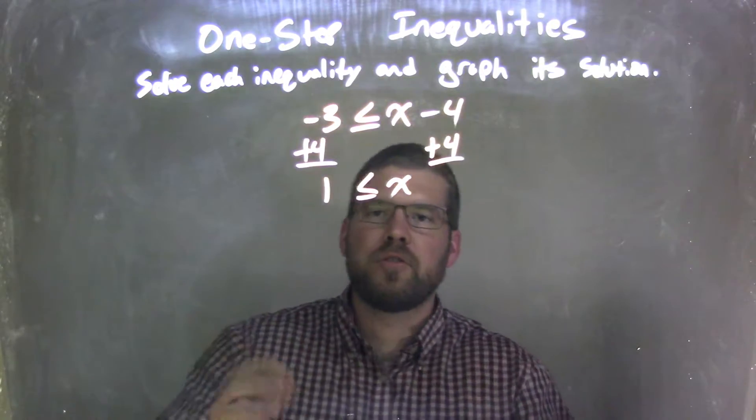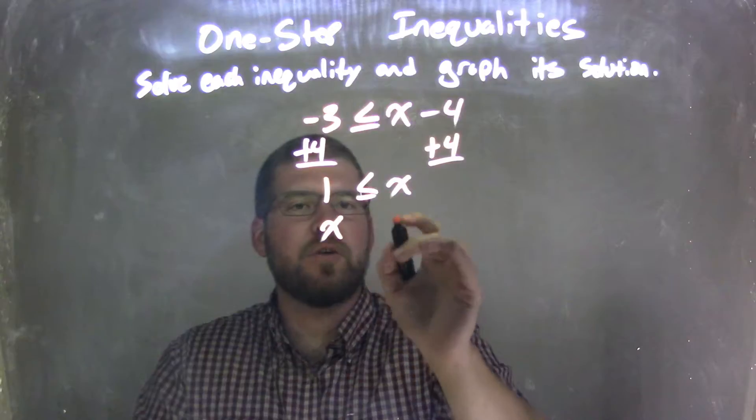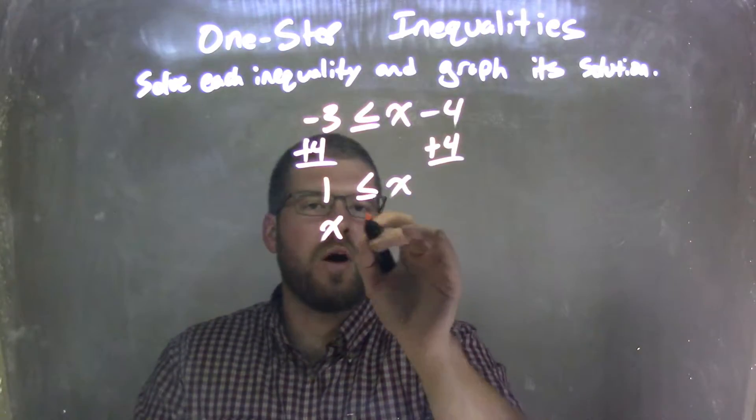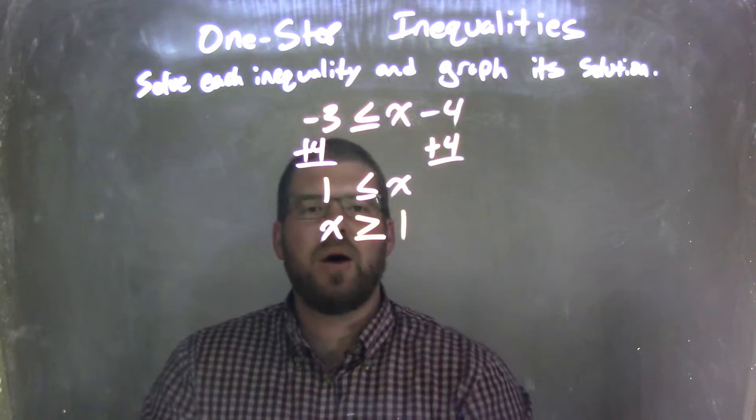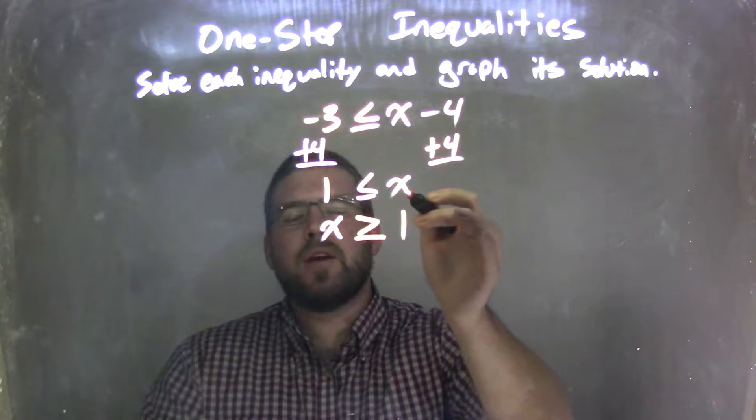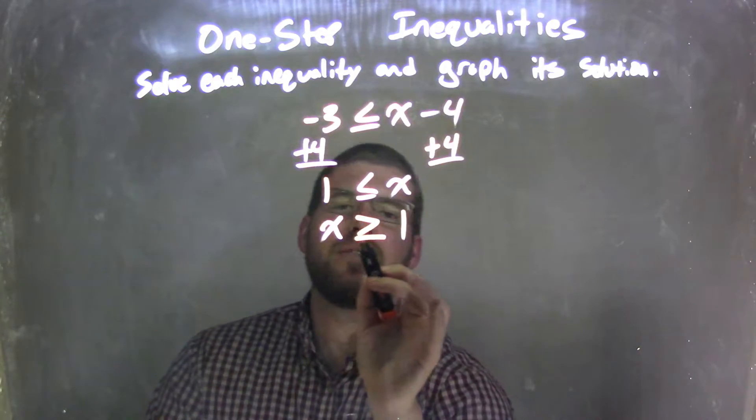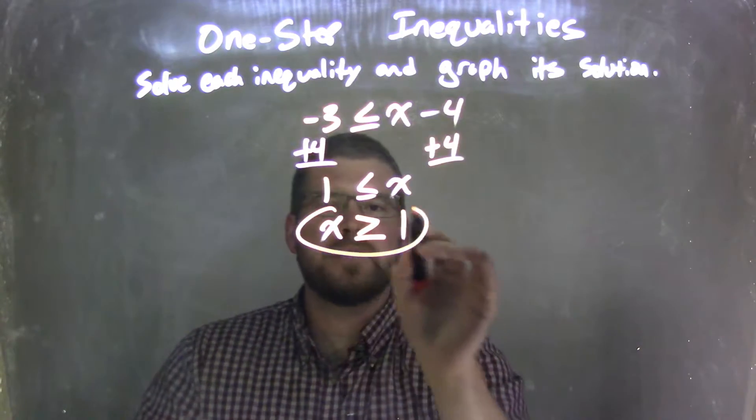But I want to write x first, so by doing that, I have to flip the inequality from less than or equal to, to greater than or equal to. So 1 ≤ x is the same thing as x ≥ 1, which is my final answer.